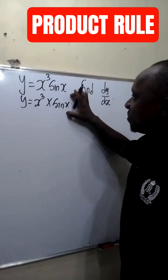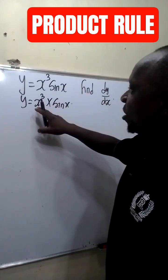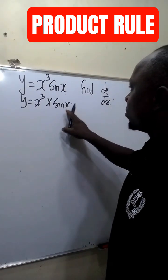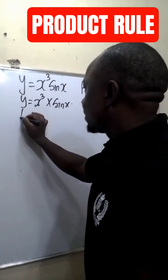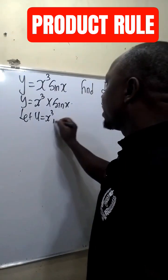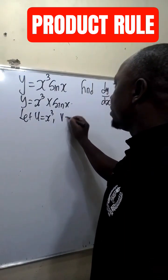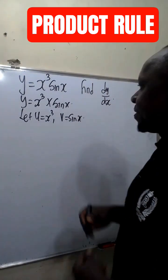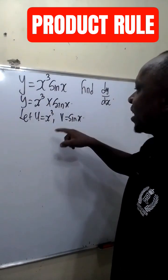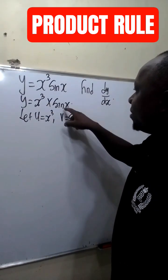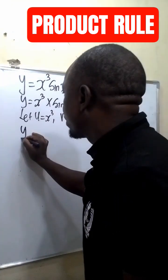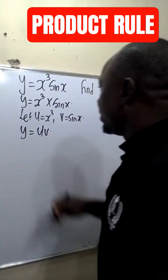We can simplify this by letting u be equal to x raised to the power 3 and v be equal to sine x. If u is equal to x raised to the power 3 and v is equal to sine x, this implies y will be equal to uv.